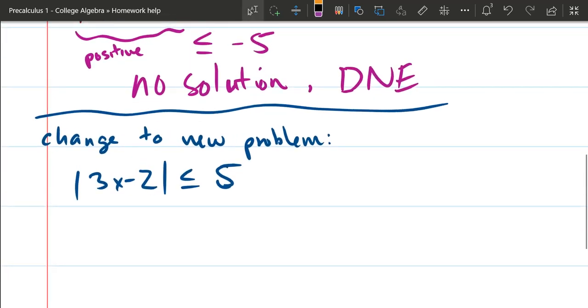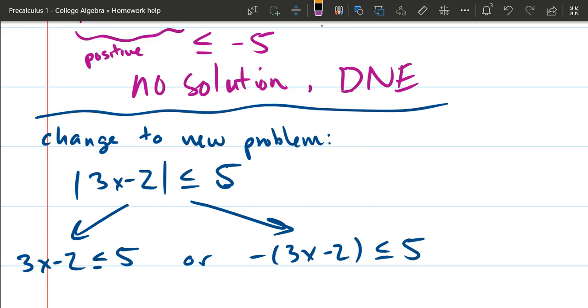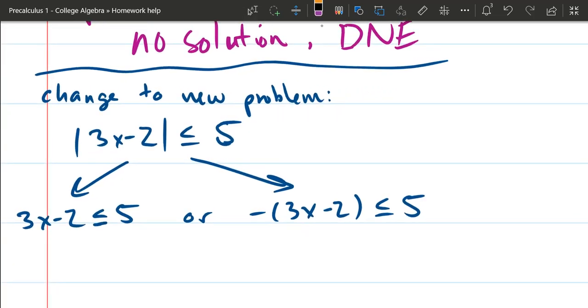...is less than or equal to 5, or -(3x - 2) is less than or equal to 5. Now from here, the left inequality is pretty straightforward: add 2, divide by 3, and you're going to get an inequality there.